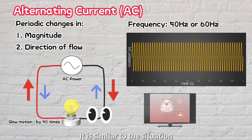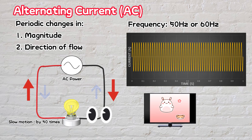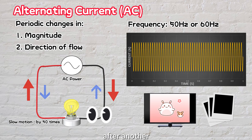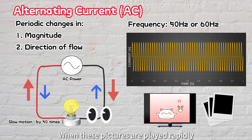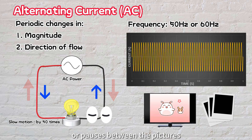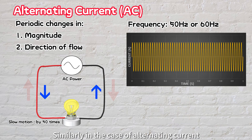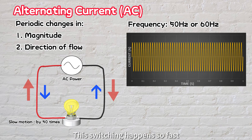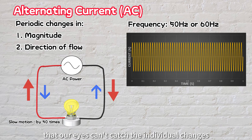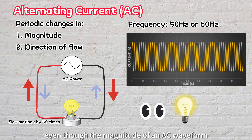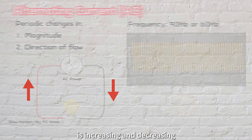It is similar to the situation when you watch a cartoon on TV. The cartoon is actually made up of many individual pictures shown one after another. When these pictures are played rapidly, it creates the illusion of continuous movement, and we don't notice any gaps or pauses between the pictures. Similarly, in the case of alternating current, the direction of the current switches back and forth very rapidly. This switching happens so fast that our eyes can't catch the individual changes. As a result, devices like light bulbs appear to glow consistently without any visible flickering, even though the magnitude of an AC waveform is increasing and decreasing.